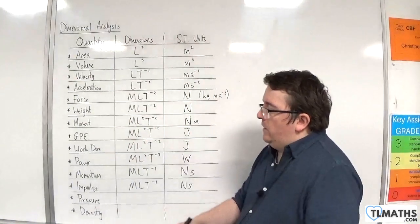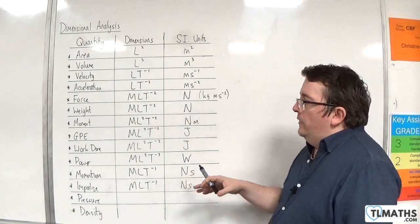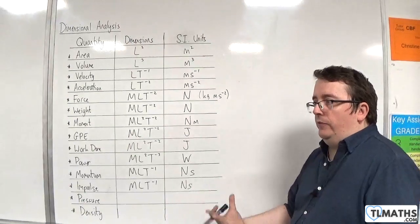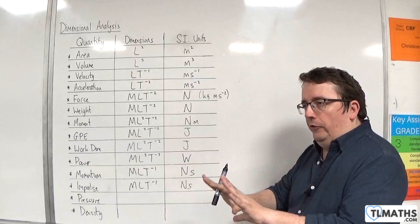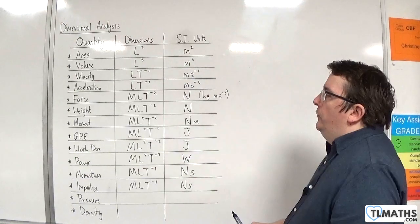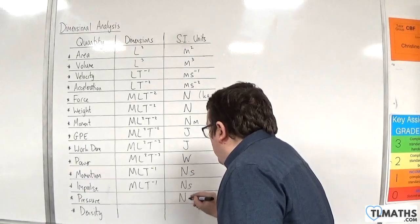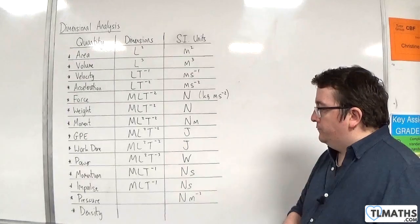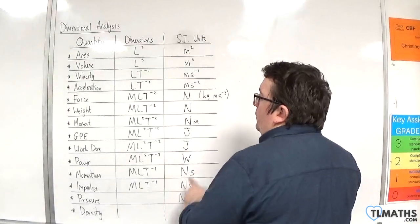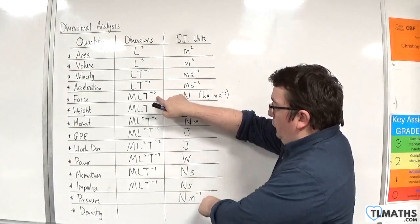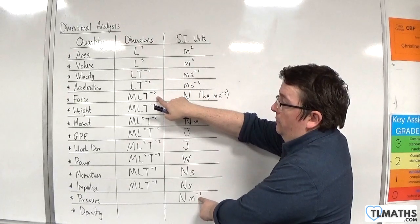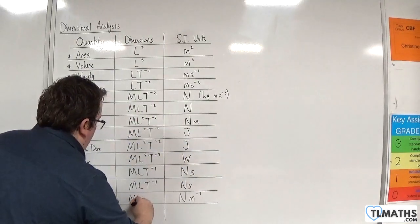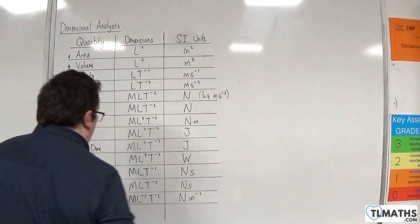For pressure and density: pressure is a force pushed onto an area, so it is newtons per metre squared — N·m to the minus two. Taking newtons (force) and multiplying by L to the minus two gives M, L to the minus one, T to the minus two.